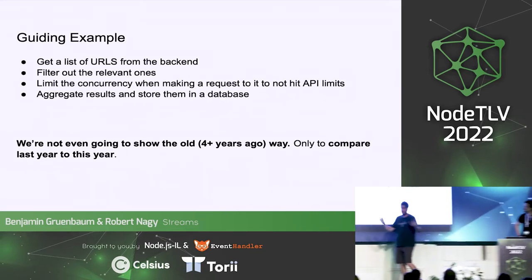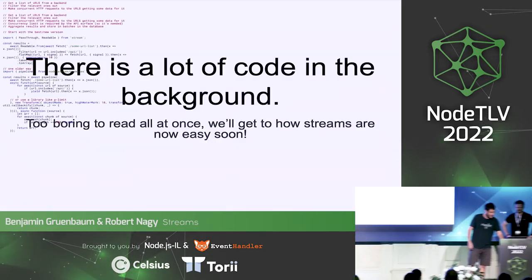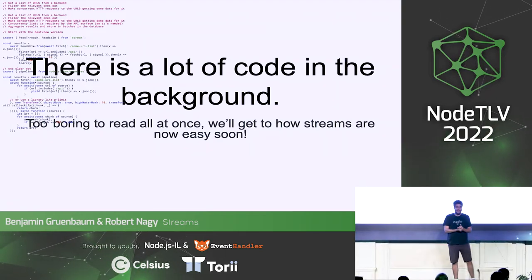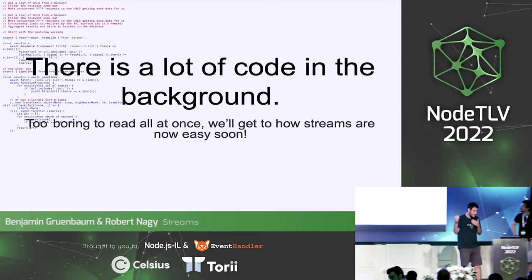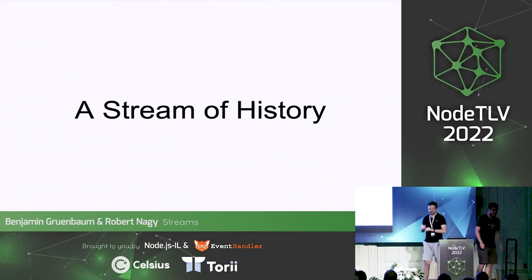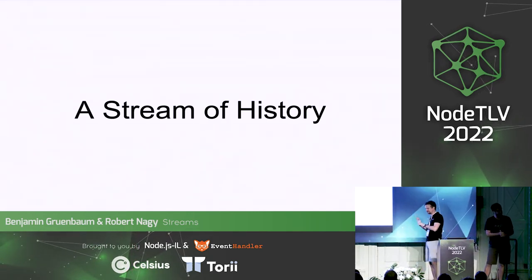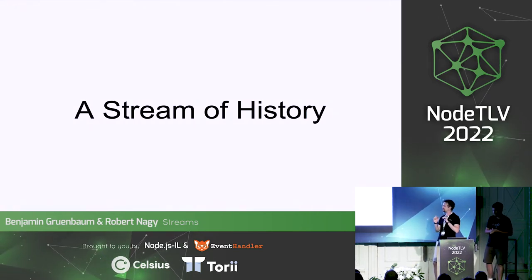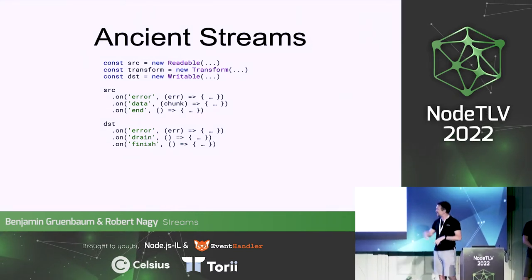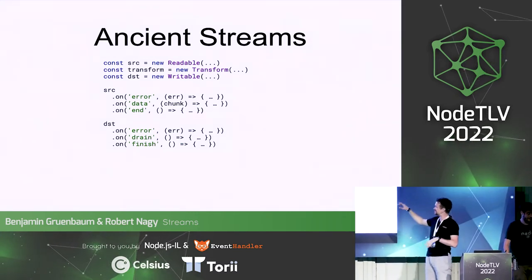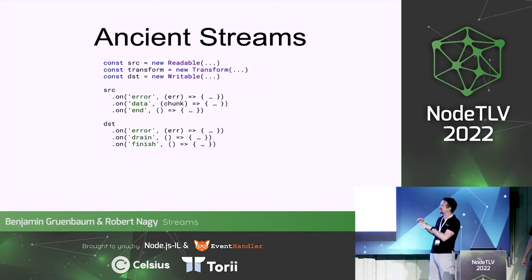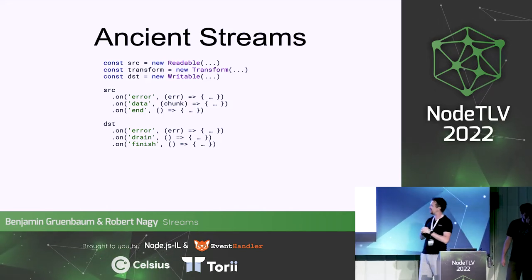There's a bunch of code in the background — we're not going to go through all the stream code of how it used to look. We'll just cover the simple stuff. So we start with a little history. The point is not for everyone to understand the code examples; I just want to make the point that it's complicated. Back in ancient times we had ancient streams — data listeners, finish listeners, you'd test the write, lots of dot-dot-dots and edge cases.